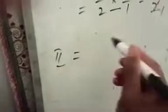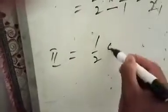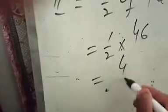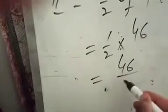1/2 of 46. 46 divided by 2. 2, 0, 4. 2, 0, 3, 0, 6. The answer is 23.